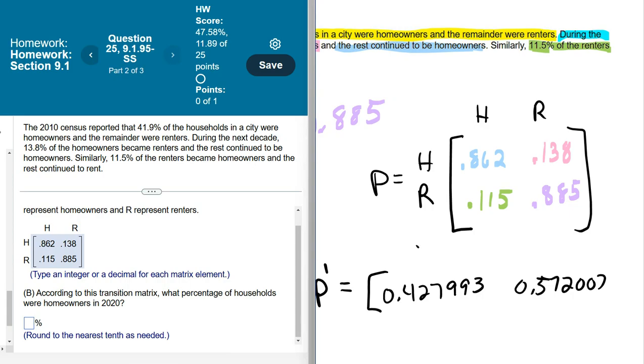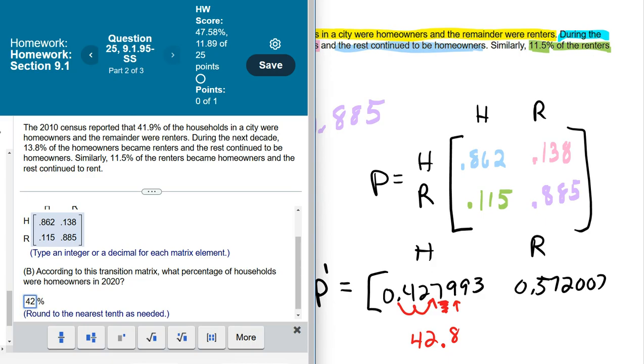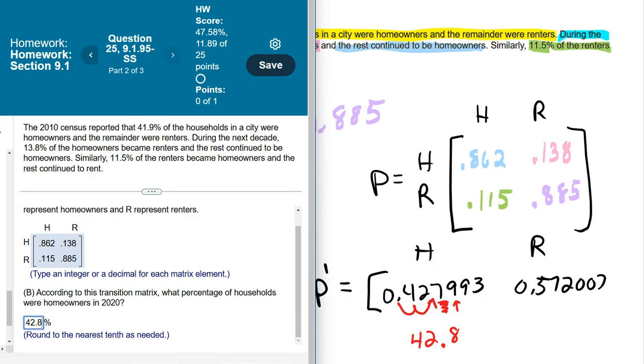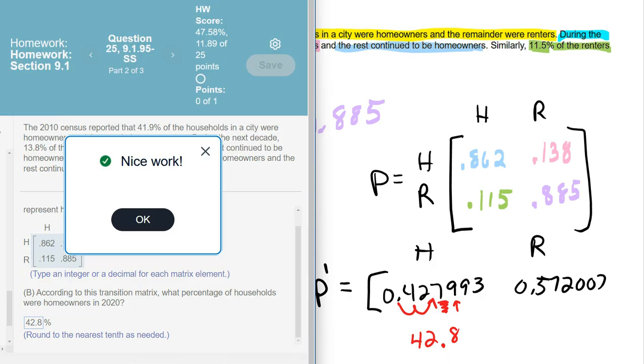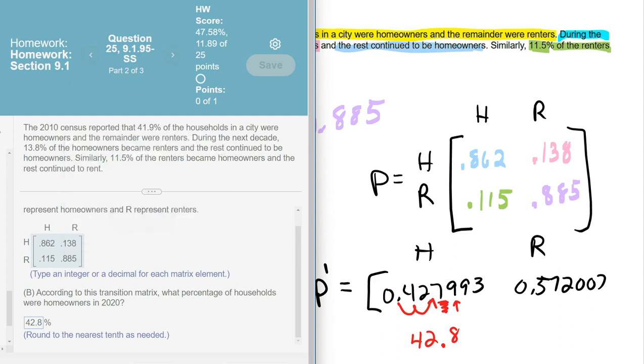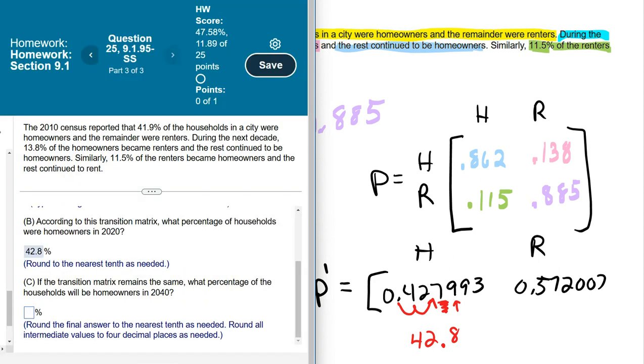What percentage of households? This is my homeowners, and this is my renters. So, you'd have to move the decimal two places to the right, making that 42 point, and then that is the number I'm going to round to, but because that's a 9, the 7 becomes an 8. So, let's go with 42.8%.